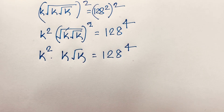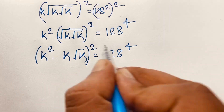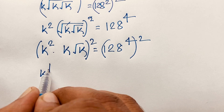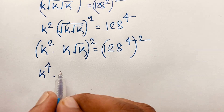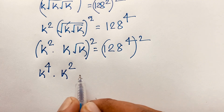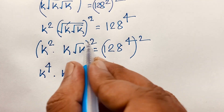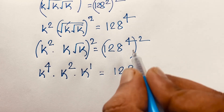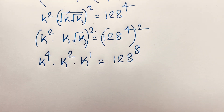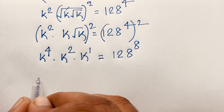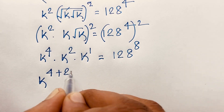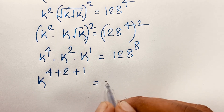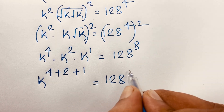Now again I use both sides whole square. You can see this expression becomes k to the power 4, and 2 times 2 gives 4, and it becomes k squared. Here the square root cancels so the exponent is 1. It becomes 128 to the power 8. So we have k to the power 4 plus 2 plus 1, adding the exponents since the base is the same, equals 128 to the power 8.